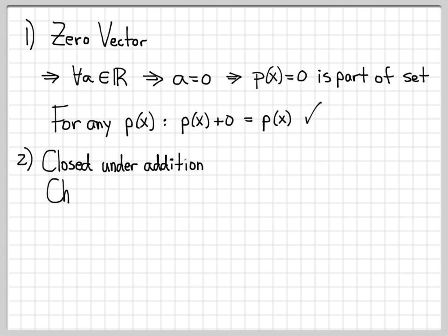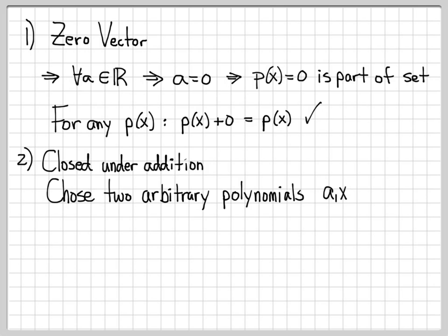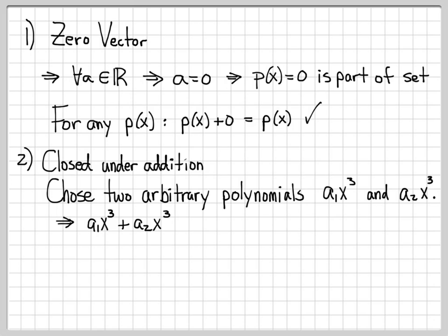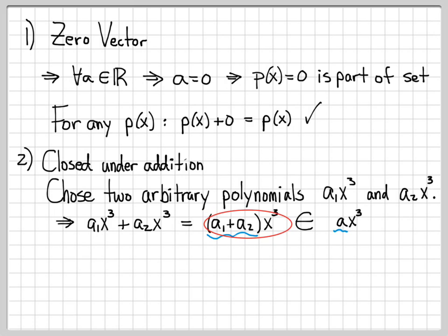Next, is the set closed under addition? Let's choose two arbitrary polynomials from the set: A1x³ and A2x³, where A1 and A2 are arbitrary real numbers. When we add them together, A1x³ + A2x³ = (A1 + A2)x³. This looks like just another element from the set of the form Ax³, where the coefficient is A1 + A2, which is a real number. So when we add two arbitrary polynomials from the set, we end up with another element in the set — it is closed under vector addition.